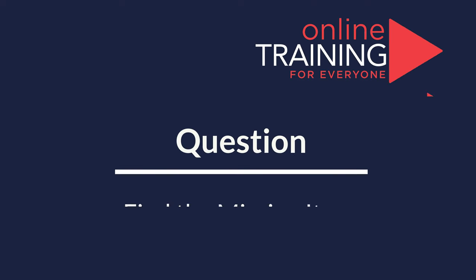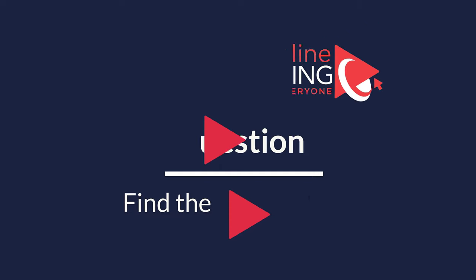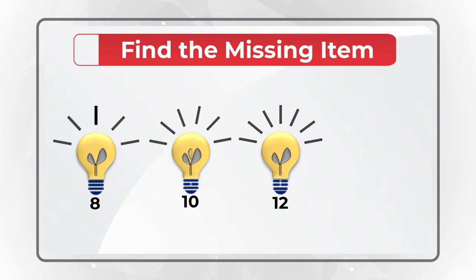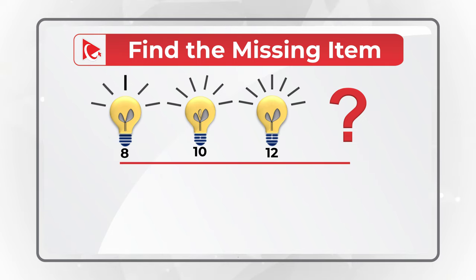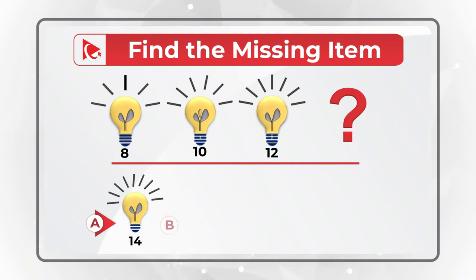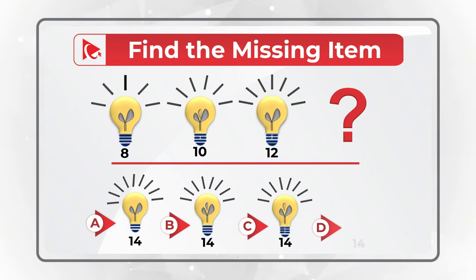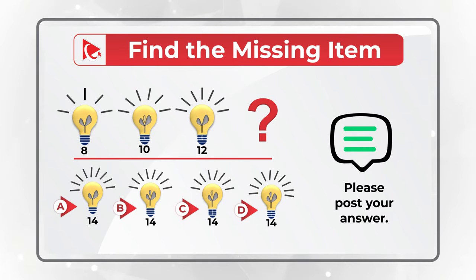I have a surprise — a question to test your skills. Please take a close look at the picture and see if you can come up with the next item in the sequence. You have four different choices: A, B, C, and D. Give yourself a few seconds to see if you can come up with the solution.